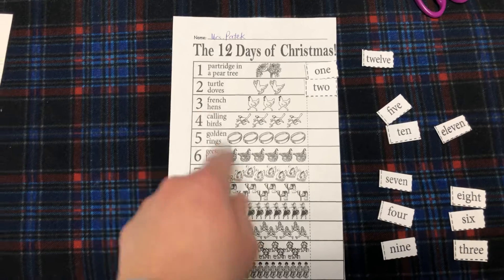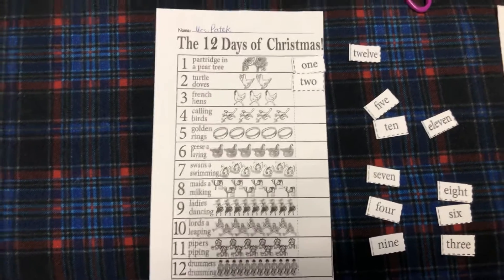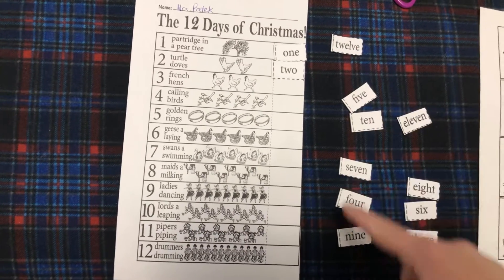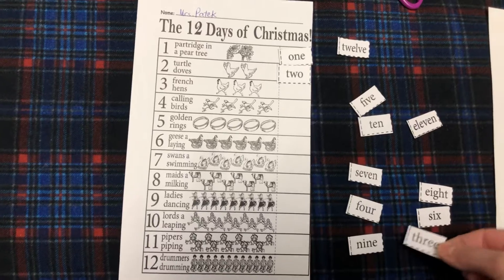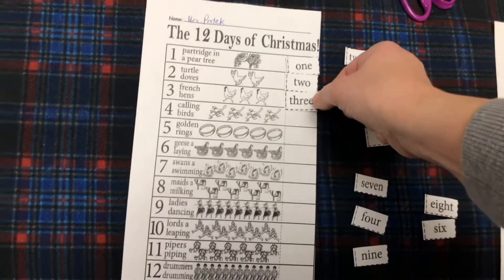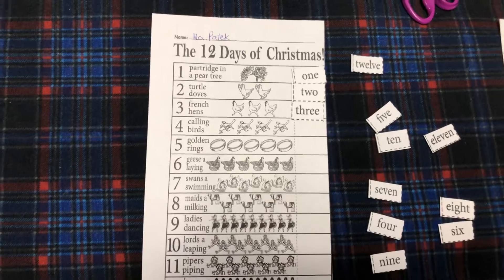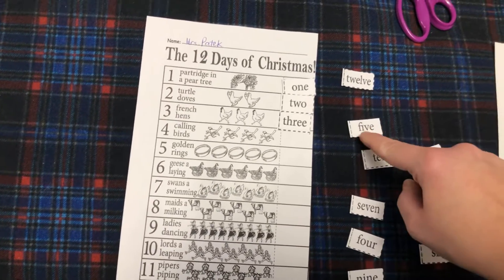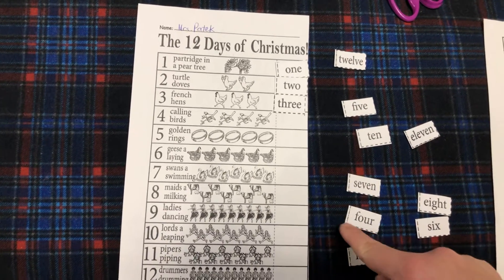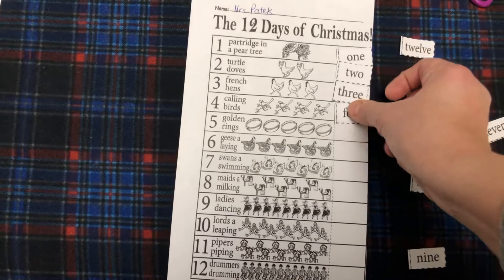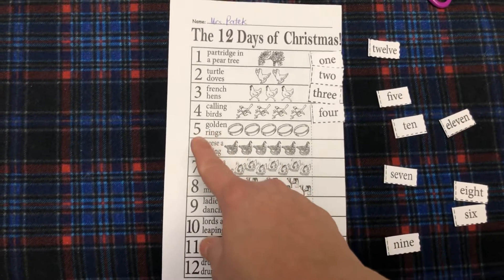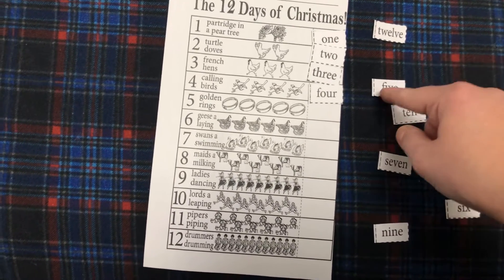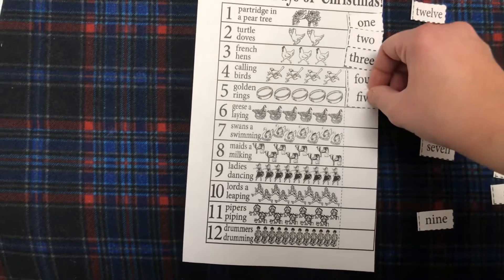Now this one is number three. It's T-H-R-E. So we're going to put that there. Now the next number is four — F-O-R. It's a sight word, right? You know it. And that one is five — F-I-V. Remember, Mommy E tells the I to say its name, so F-I-V — five. We're going to put that one there.